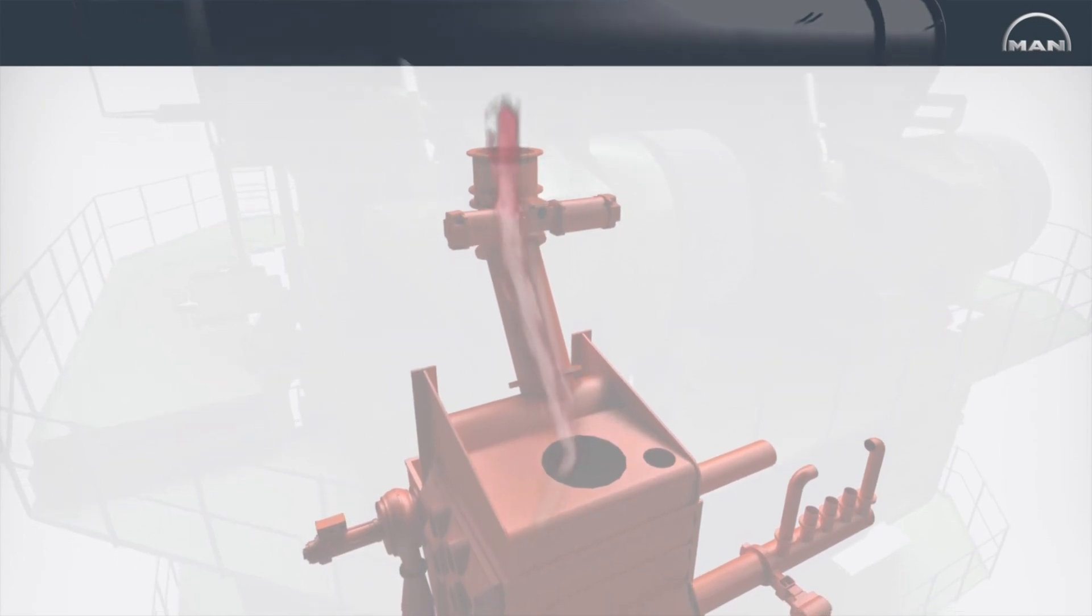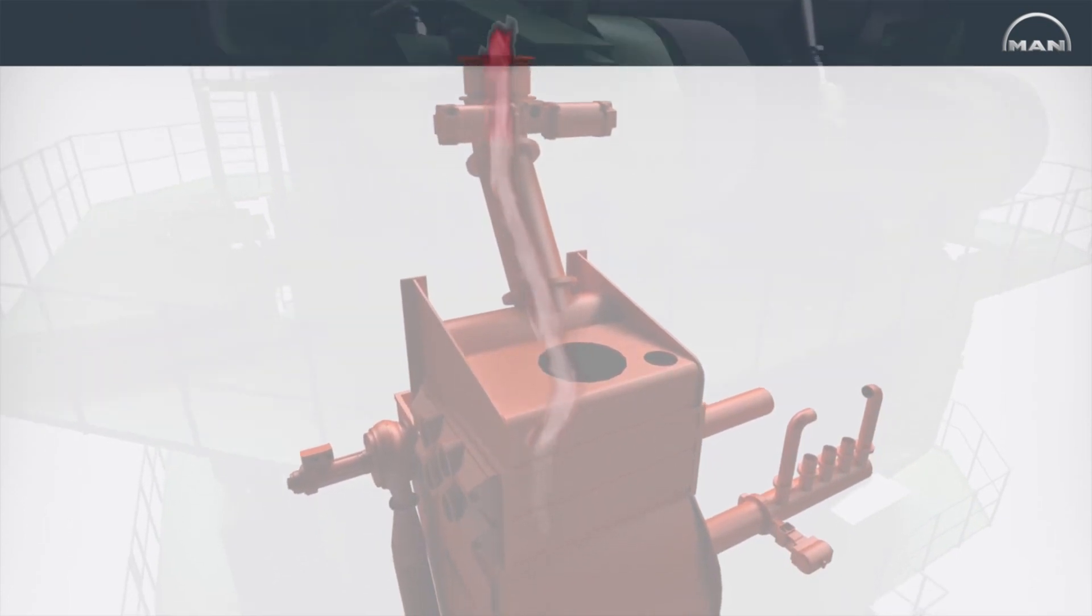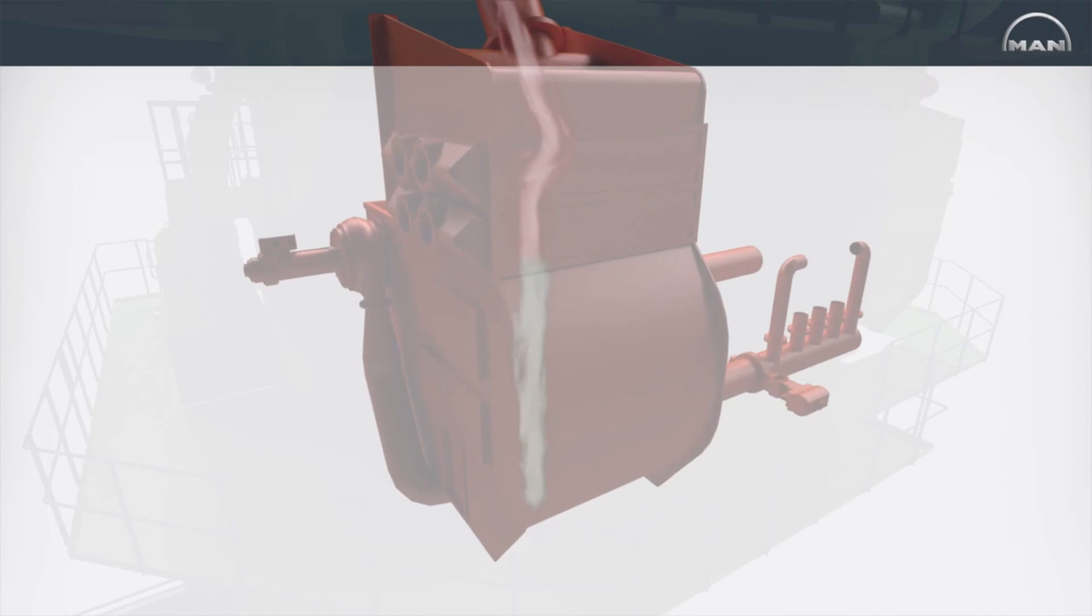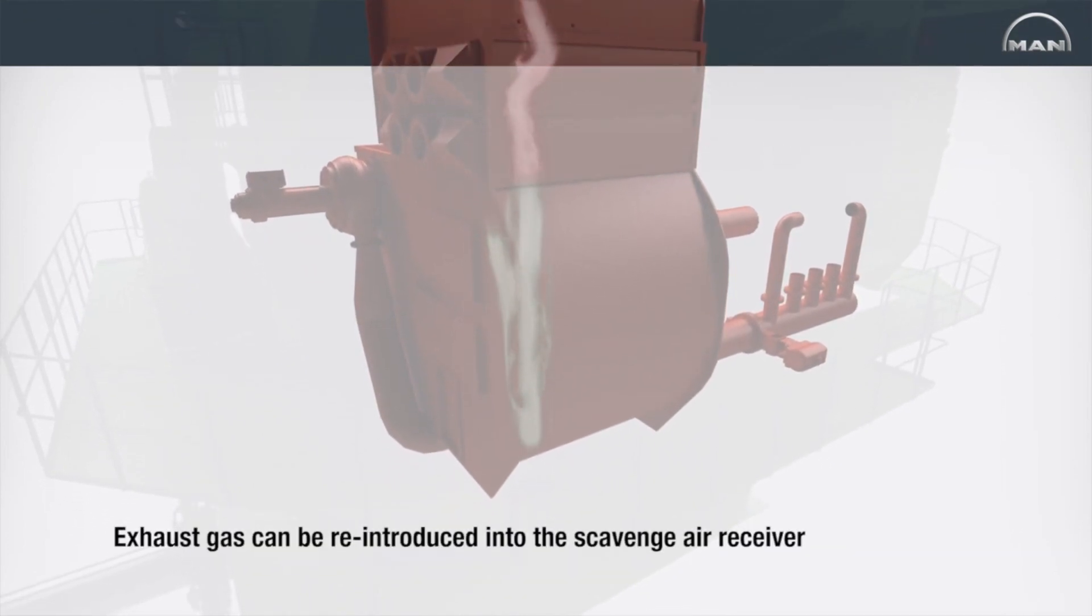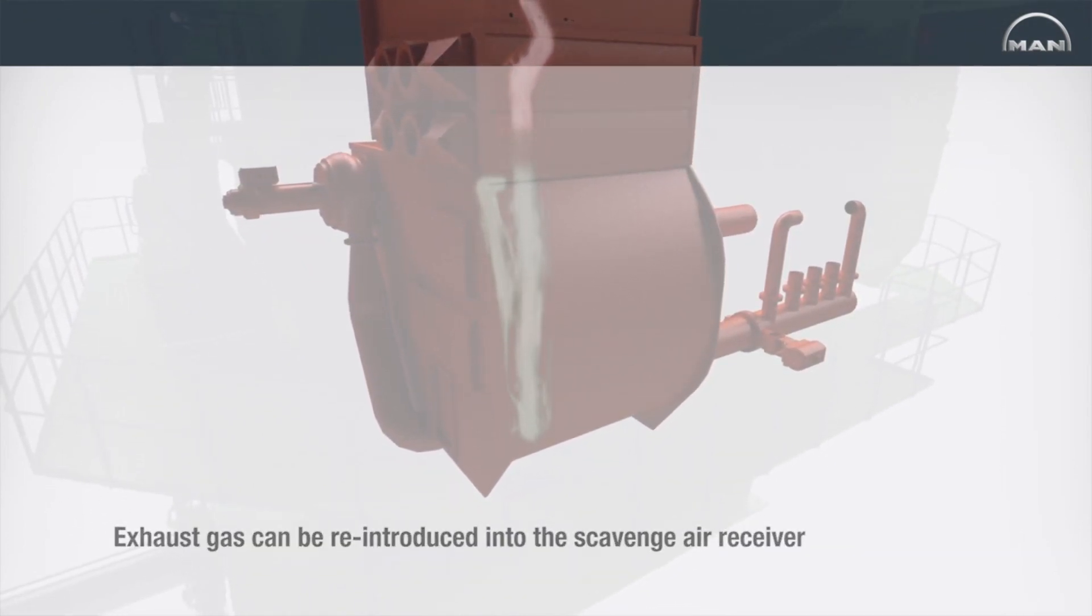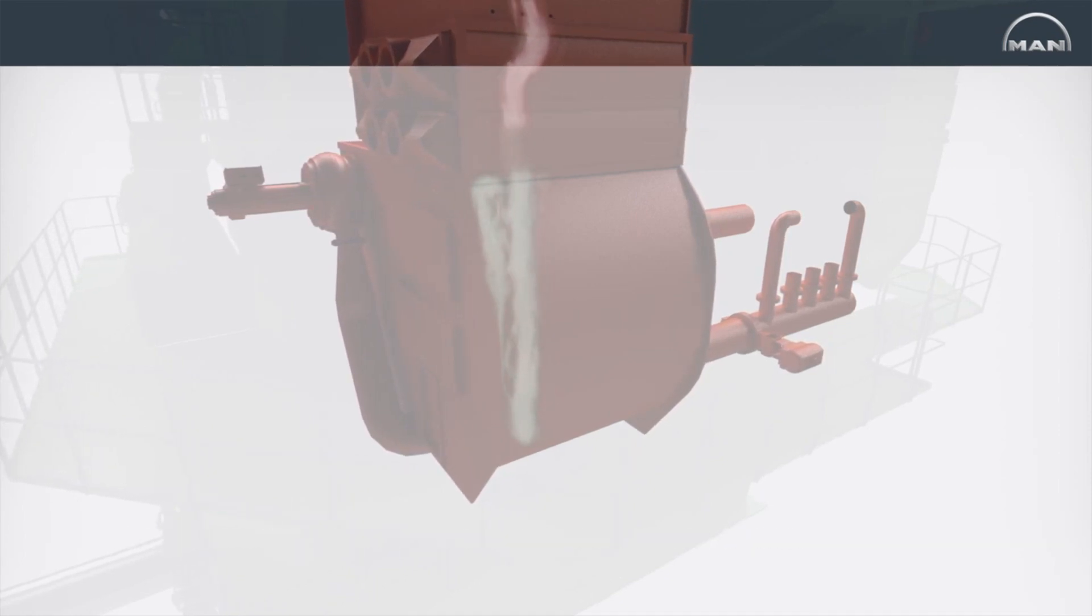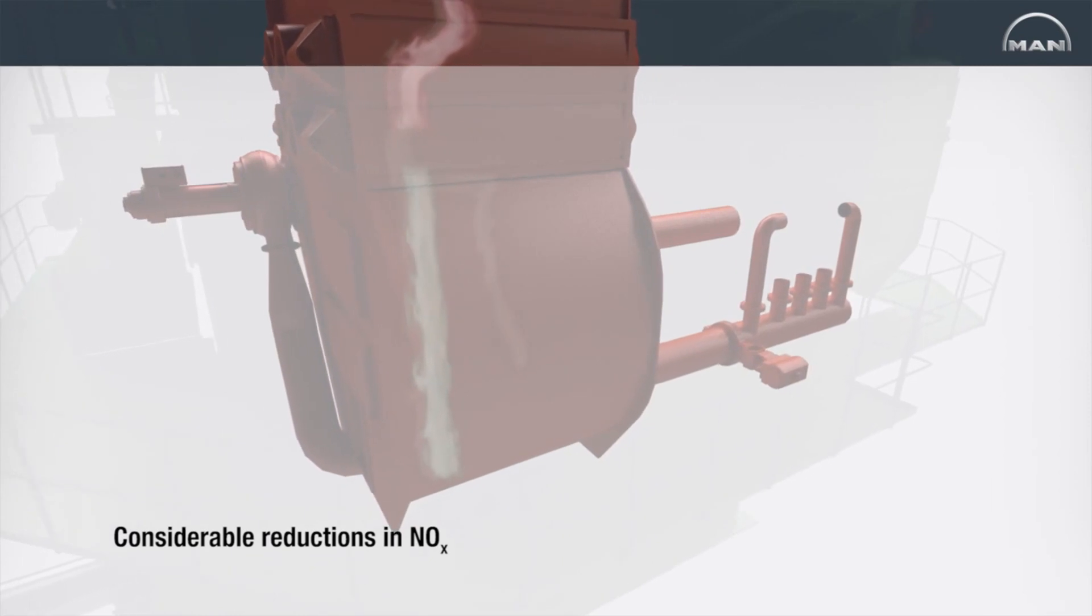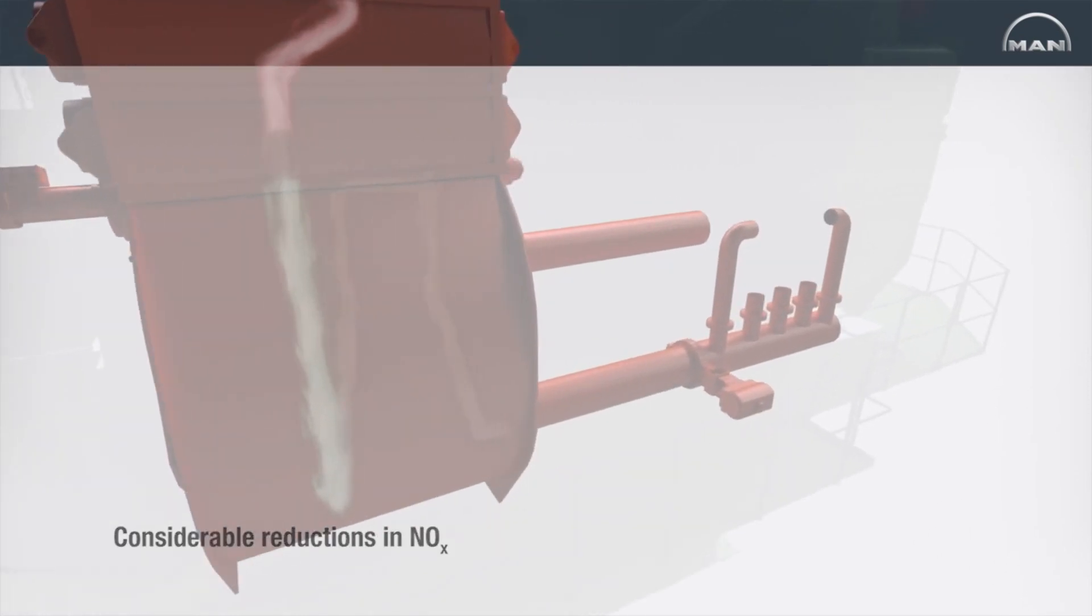From the scrubber unit, the exhaust gas is led through a water mist catcher that traps water droplets and prevents water carryover before the exhaust gas can be reintroduced into the scavenge air receiver. Tests of EGR units have displayed considerable reductions in NOx with just a low penalty in terms of overall system efficiency.